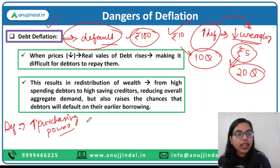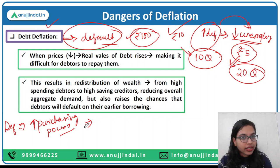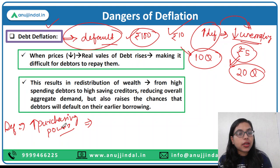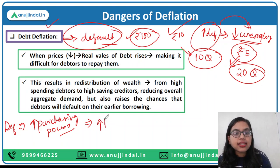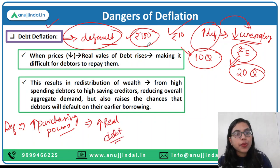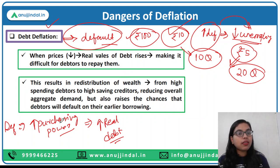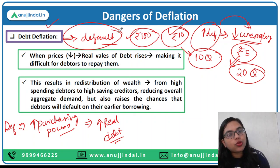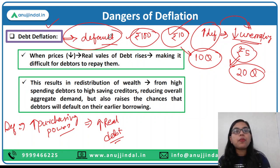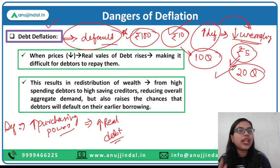With the same 100 rupees you could earlier buy 10 packets of Maggi, but now with that same 100 rupees you can buy 20 packets. That means purchasing power increases — and this applies to everyone, including debtors and creditors. So with increasing purchasing power, that results in increasing the real value of debt. If you had taken 100 rupees as a loan and the creditor used to be able to purchase only 10 quantities of a good with that repayment, now if deflation has occurred and purchasing power has increased, when you repay 100 rupees the creditor can now purchase 20 packets.